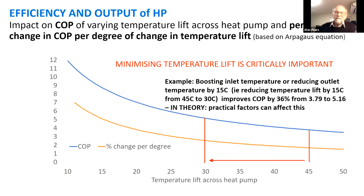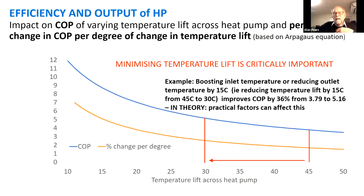When people talk about heat pumps they talk about coefficient of performance, or COP. The COP is essentially the efficiency divided by 100: a 100% efficient electric fan heater has a COP of one. A COP of four means you're being four times as efficient as the most efficient electric heater. This graph highlights the orange line showing the percentage change in COP you get by reducing the temperature lift across the heat pump by one degree, and the temperature difference between the evaporator and condenser is incredibly important.